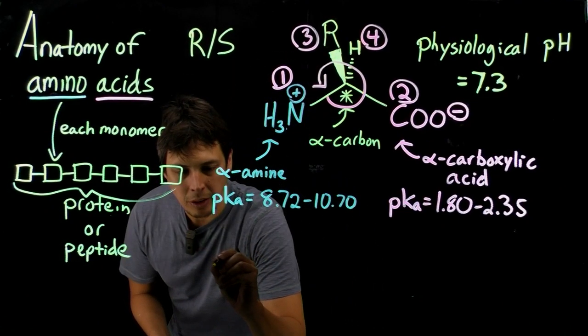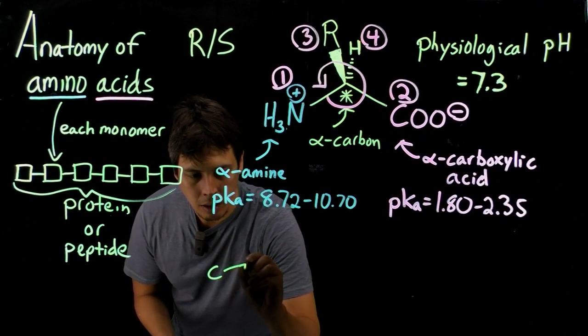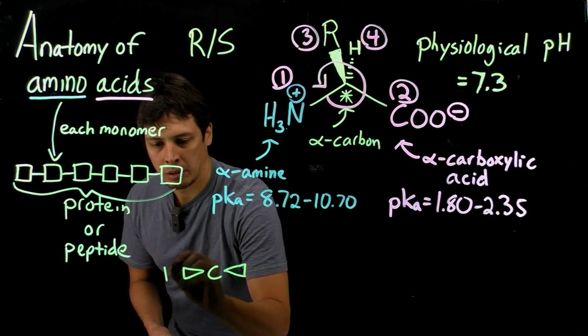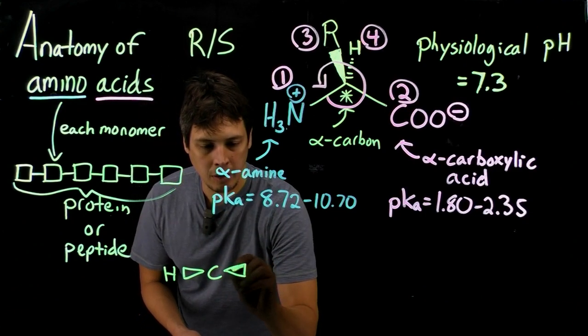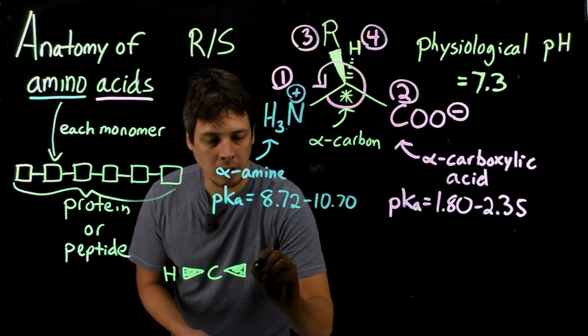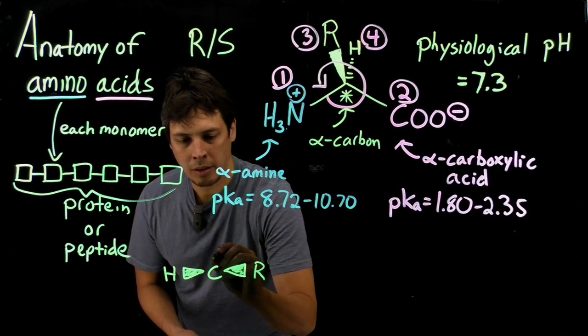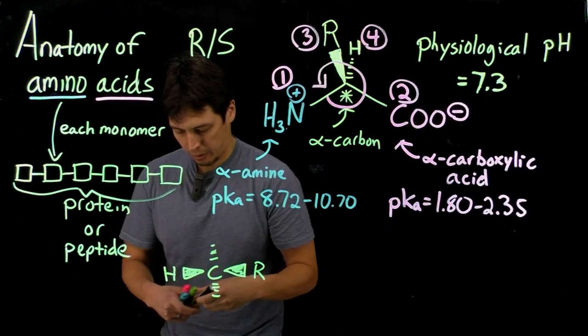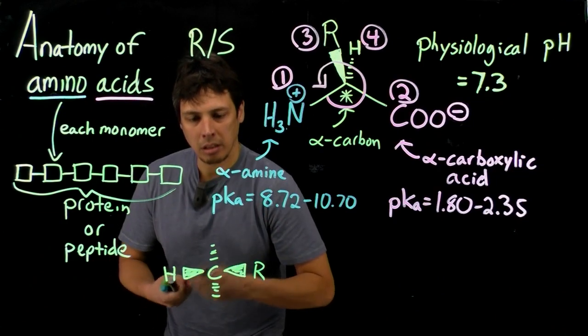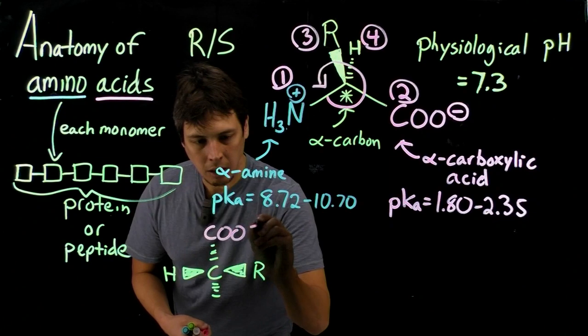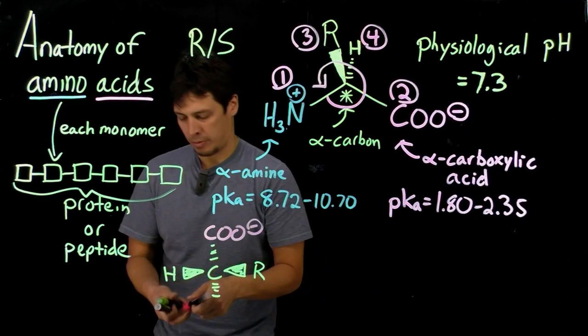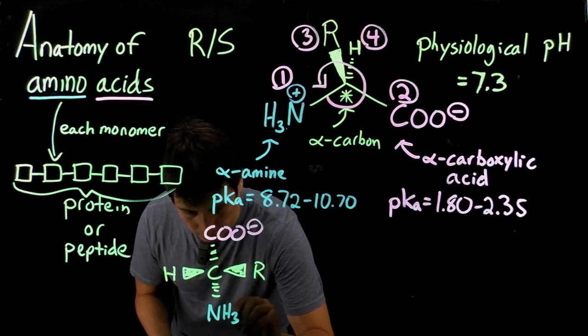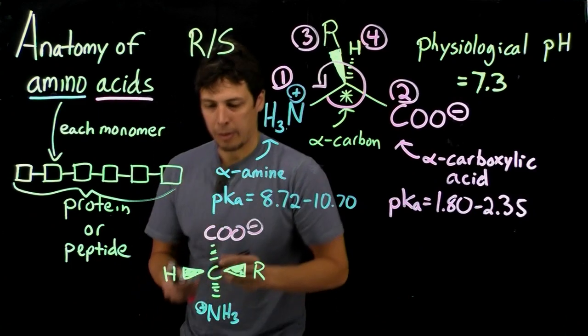Let's start over here. Alright, so we have the carbon, alright, we have the hydrogen over here, we have the R group on the right, and then we have dash wedges for both the up and down, and then that's going to be with the carboxylate on top, and the amine going down, okay.